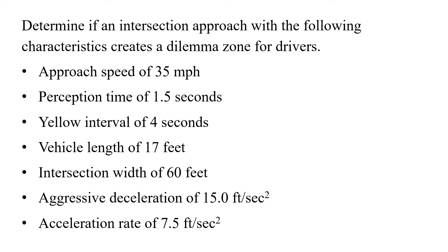Let's look at an example. We'll determine if an intersection approach with the following characteristics creates a dilemma zone for drivers. We're given an approach speed of 35 miles per hour, a perception time of 1.5 seconds, a yellow interval of 4 seconds, a vehicle length of 17 feet, an intersection width of 60 feet, an aggressive deceleration rate of 15 feet per second squared, and an acceleration rate of 7.5 feet per second squared. These are the values we'll need for this problem.